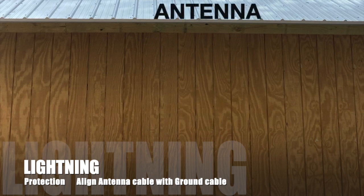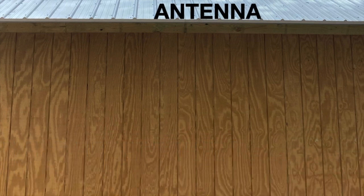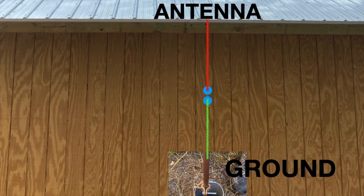If you're concerned about lightning hitting your roof, generally speaking, lightning doesn't turn corners. So run your antenna line in alignment with your ground. Most likely, it'll mostly go into the ground.